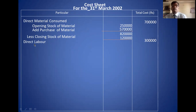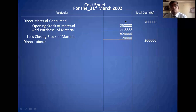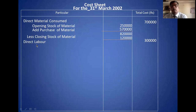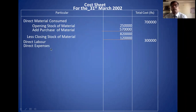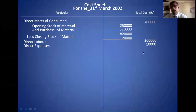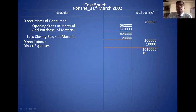Second item is direct labor, which is 3,00,000. It may be called by any name — direct wage, direct labor, productive wage, or only wage. Third item is direct expense, which is 10,000 in the problem. The total of direct material, direct labor, and direct expense is called prime cost. The prime cost is 10,10,000 rupees.